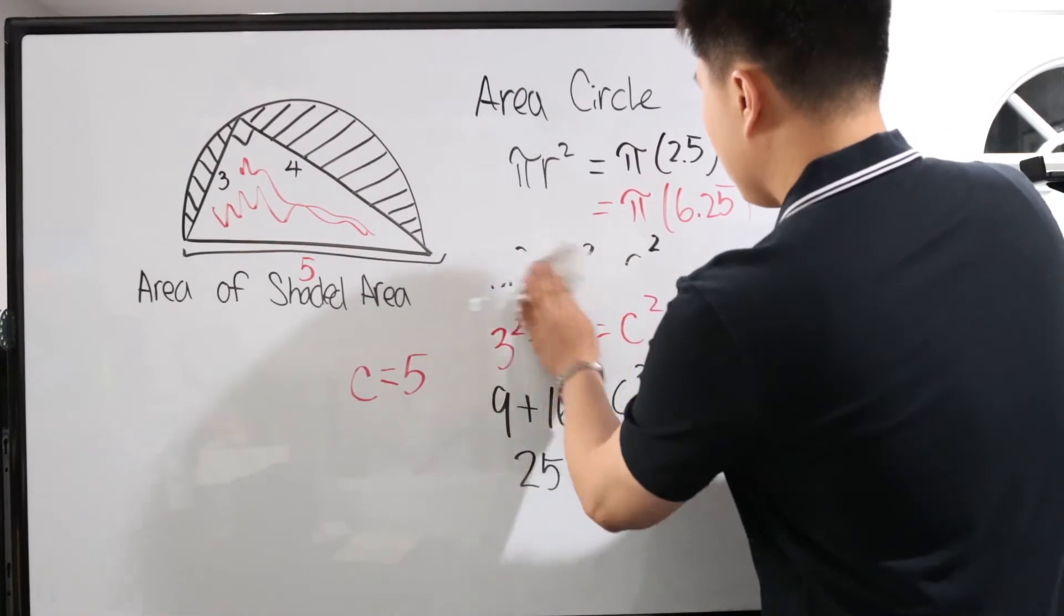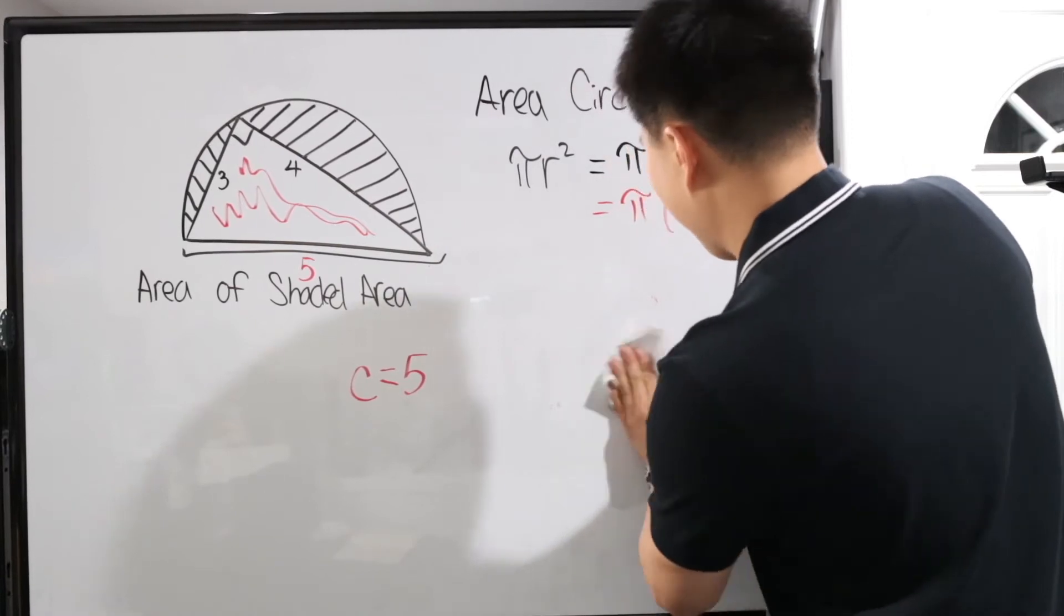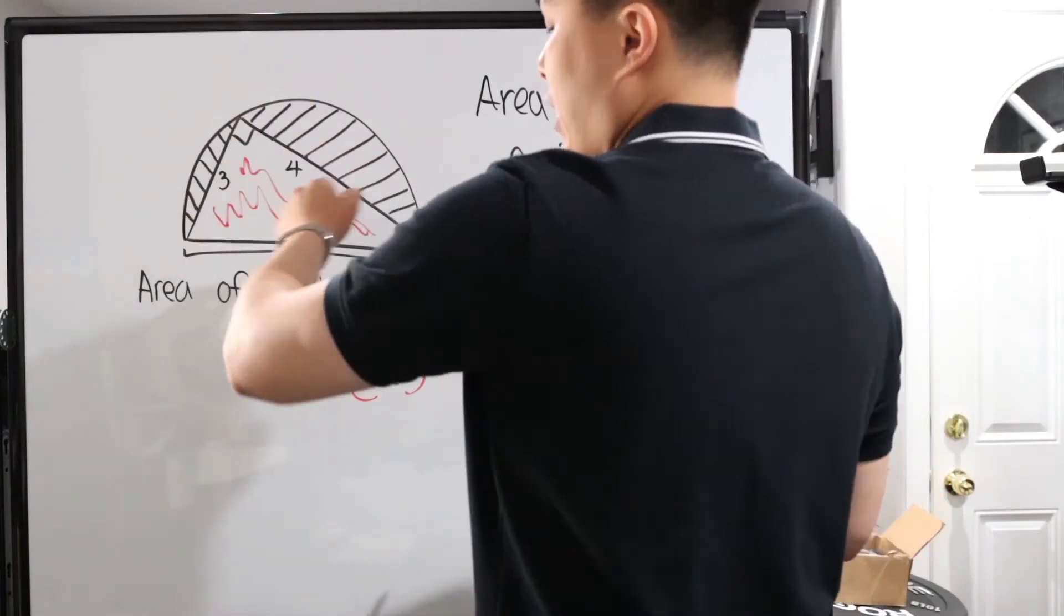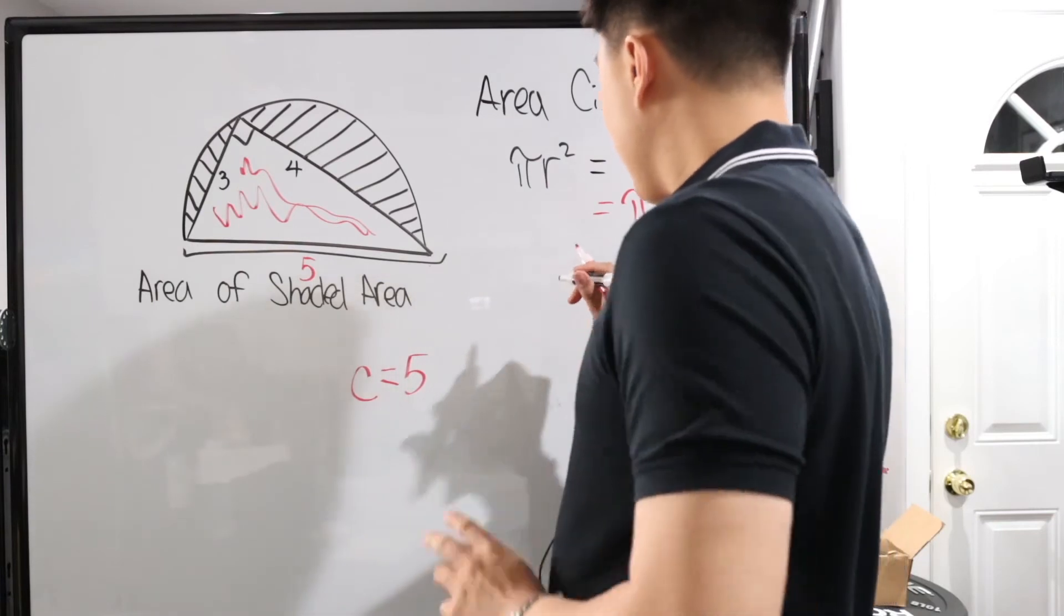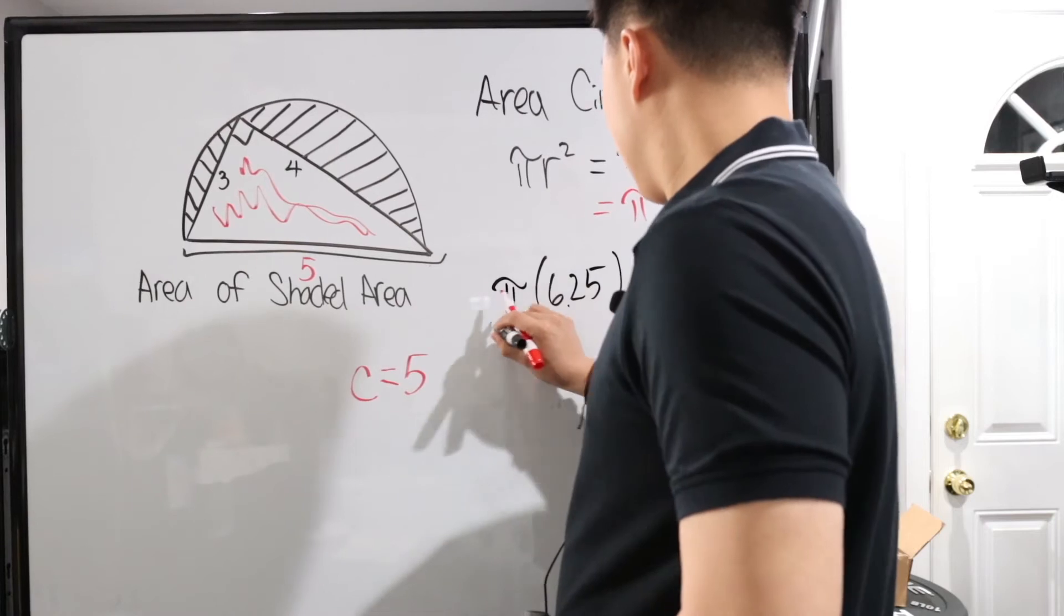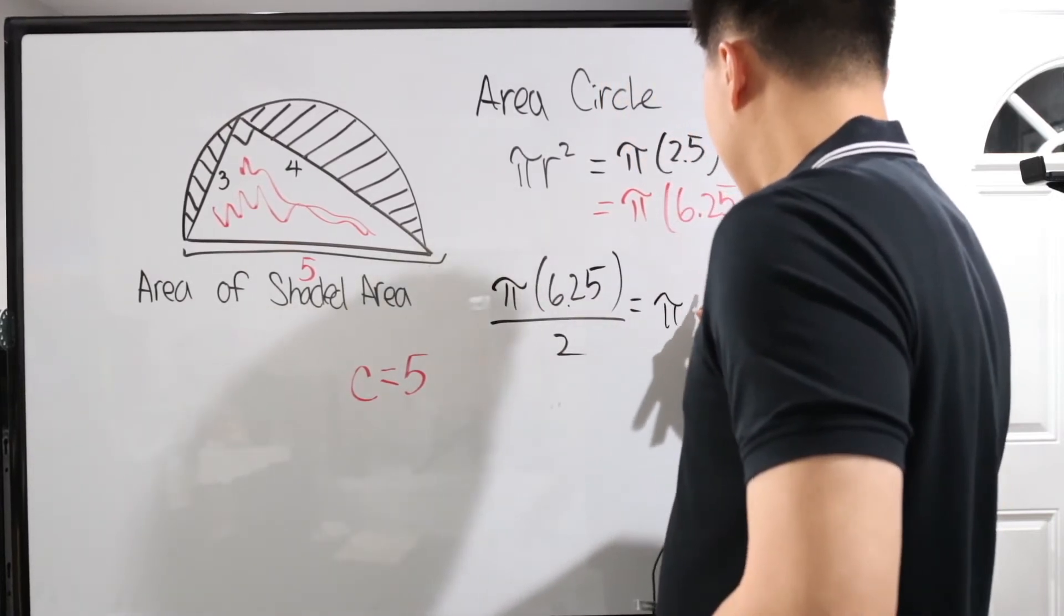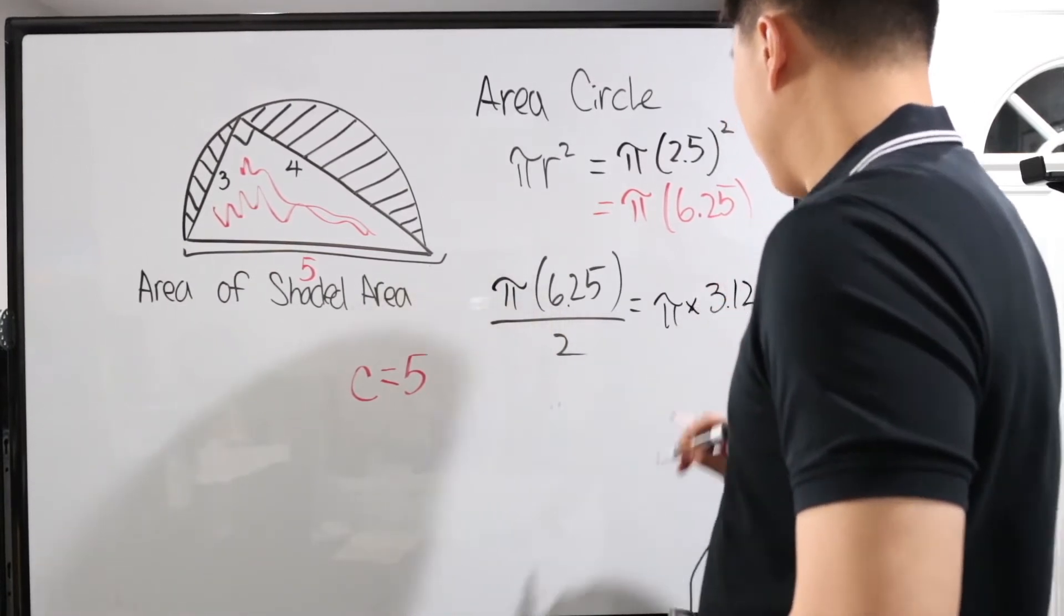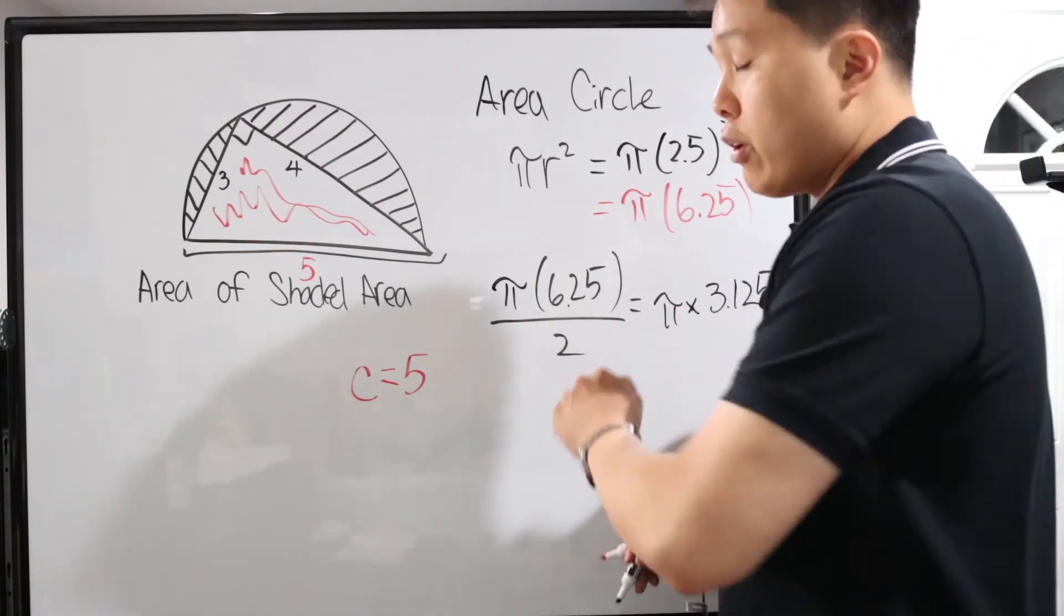So I'm going to erase all this so that we have a little more area to work with. So this is the area of a circle, but we're worried about a semicircle. So in other words, we have to divide this whole thing by two. Here, we're going to have pi 6.25 divided by two, which gives us pi times 3.125. So that's the area of a semicircle.